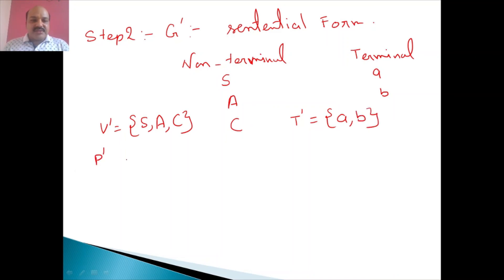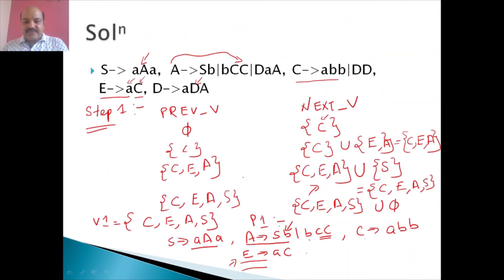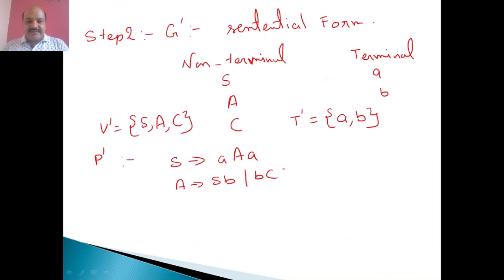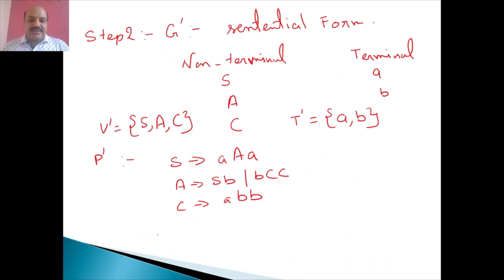The production rules for the reduced grammar G prime will be: S is rewritten as AAAA; A is rewritten as SBBC; and C is rewritten as ABB. The production A is rewritten as AC is not going to be considered because E does not appear in any sentential form. So this is the reduced grammar.